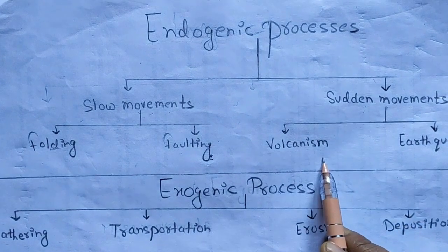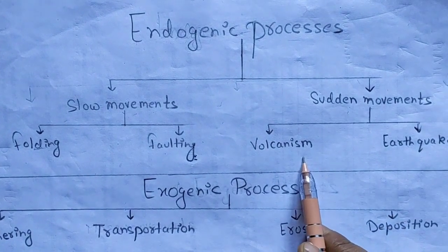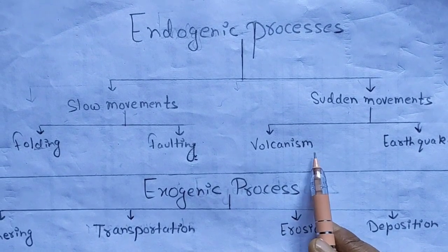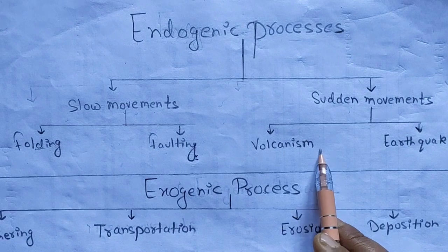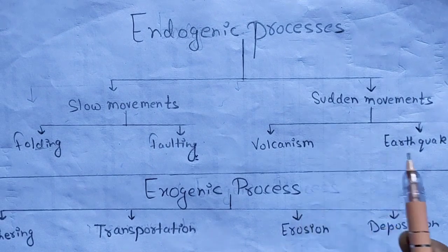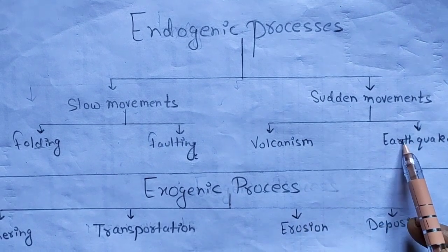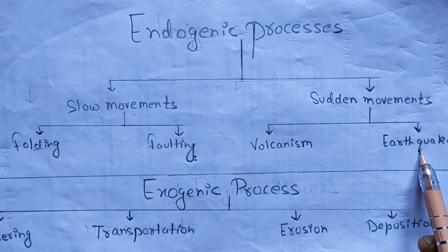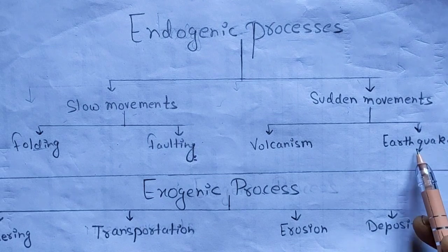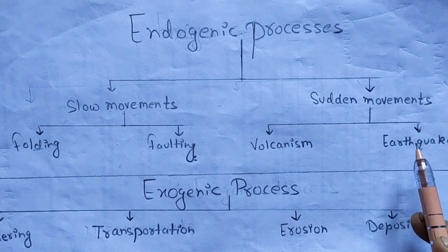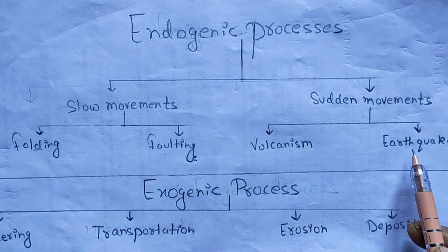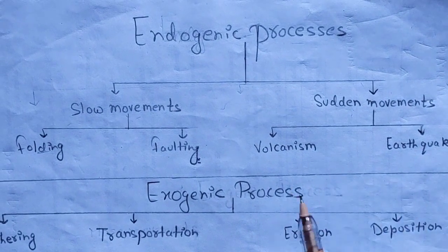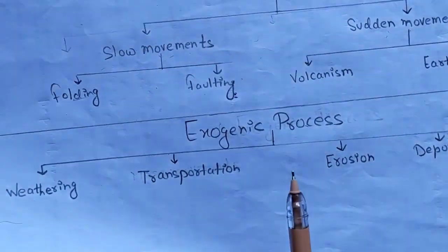A volcanic eruption occurs when hot materials from the earth's interior are thrown out of a volcano. An earthquake is the sudden movement of the earth's tectonic plates, resulting in shaking of the ground. These are the sudden movements under endogenic processes.